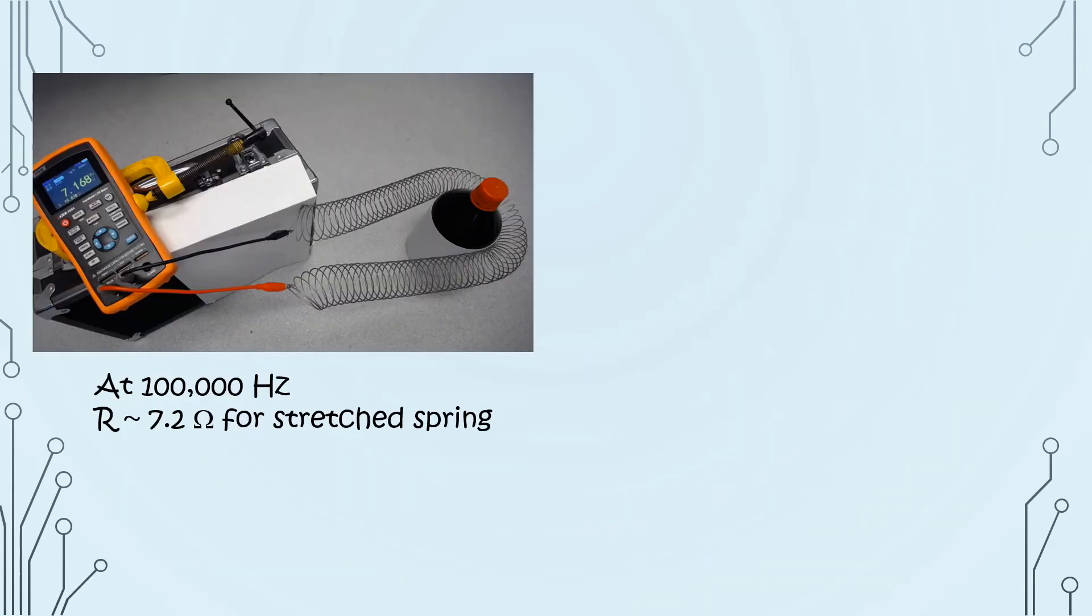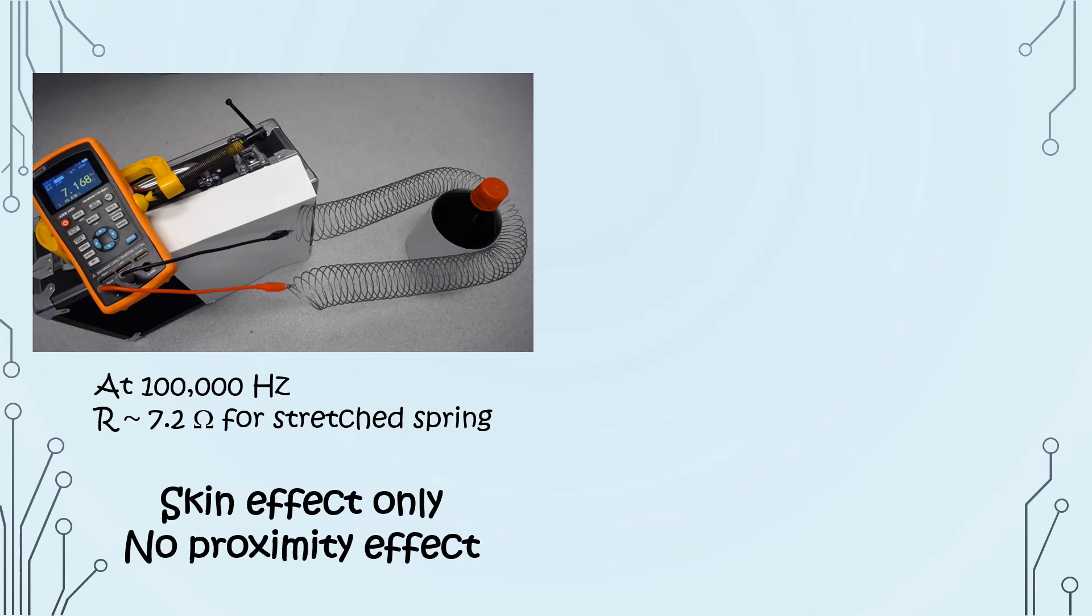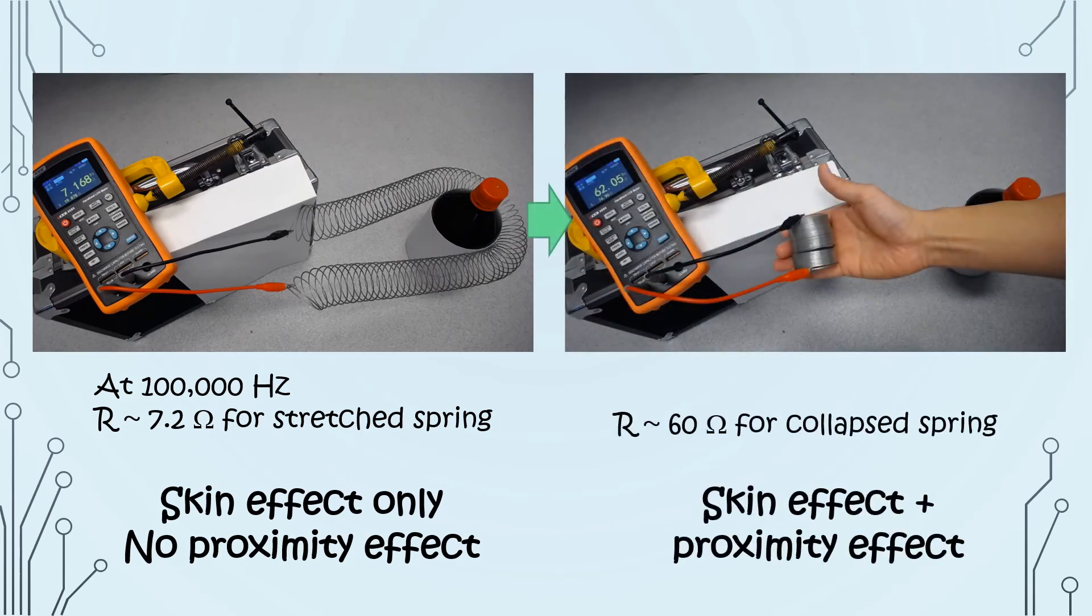Proximity effect only occurs if the wires are close together. This is why when the spring is stretched out, there is no proximity effect, and the resistance is low. When we collapse the spring, the wires get closer together, and the resistance increases with proximity.